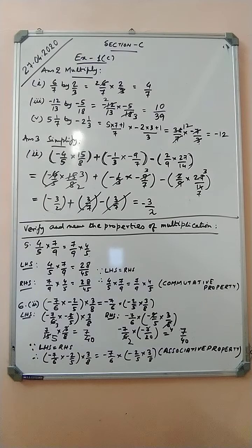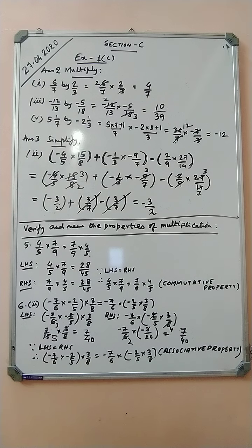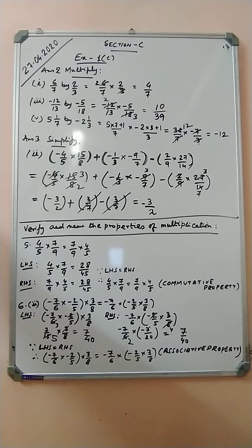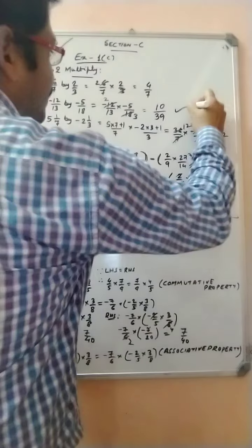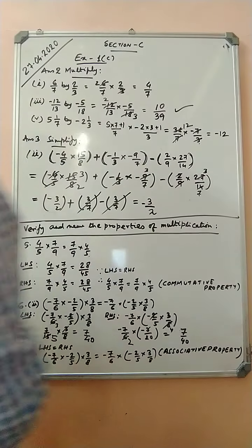...multiplied by two by three. That gives 24 by 42, simplifying to 4 by 7. Part number three: minus twelve by thirteen, multiplied by minus five by eighteen. So minus twelve by thirteen into minus five by eighteen — minus times minus is plus — gives ten by thirty-nine.